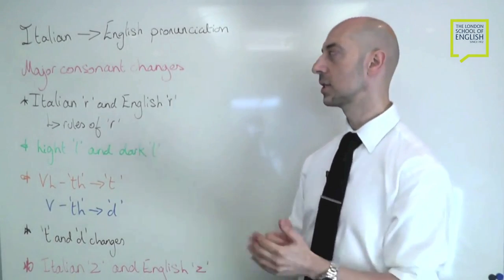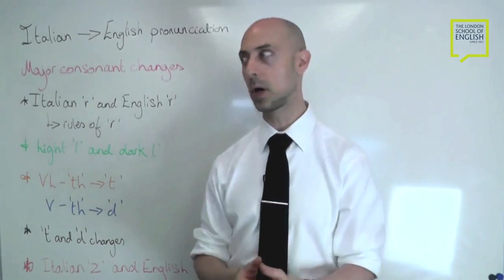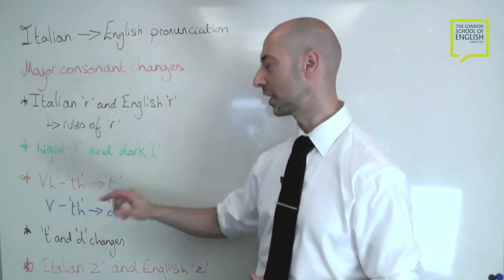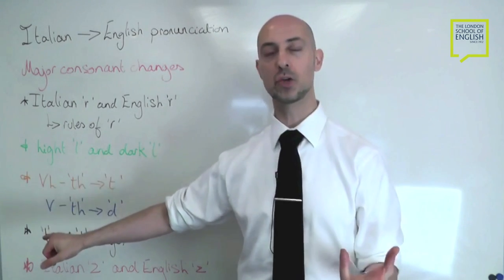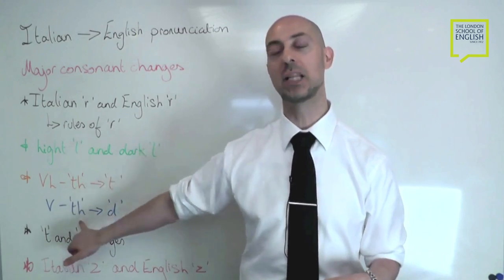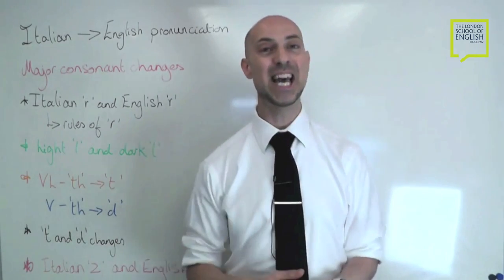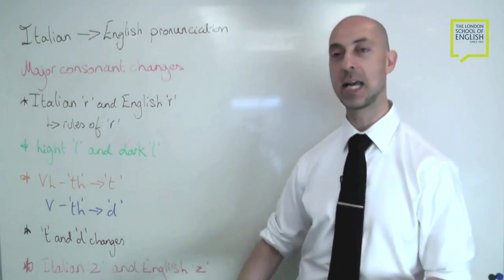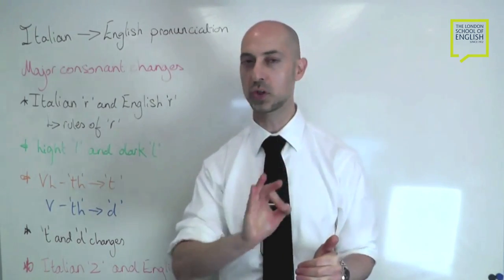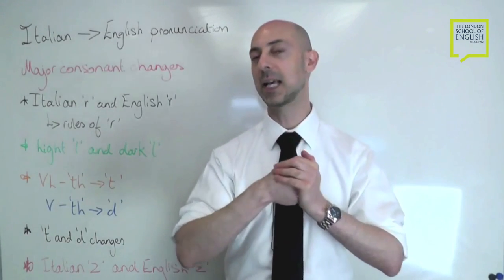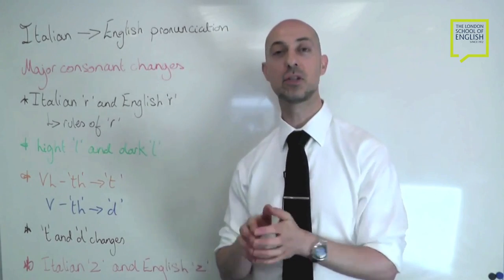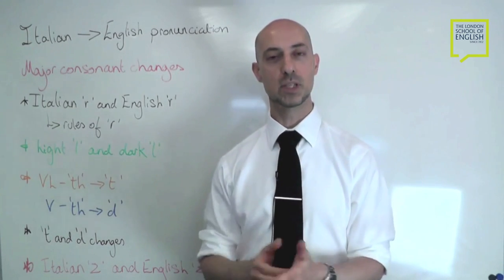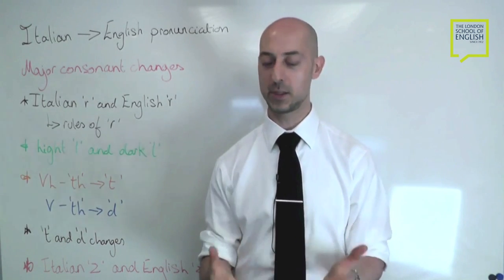So we've covered today the major consonant changes, the Italian R versus the English R and the rules of the R. We've spoken about the light L and the dark L, which is used primarily in English pronunciation. We've spoken about the voiceless TH and the potential to turn it into a T. We've spoken about the voiced TH and the potential to turn it into a D. We've spoken about the T and D changes, and the Italian Z and the English Z, and how the English Z is a lot smoother, a lot simpler, less force in the attack. Please remember that whenever you're using any of these sounds, just use them with less effort. I'm not suggesting that you be lazy, but be specific, but don't work yourself too hard because it will just create more tension for you. If you want to see more of the work that we do, please come back to the London School of English website to see more videos. Thank you.